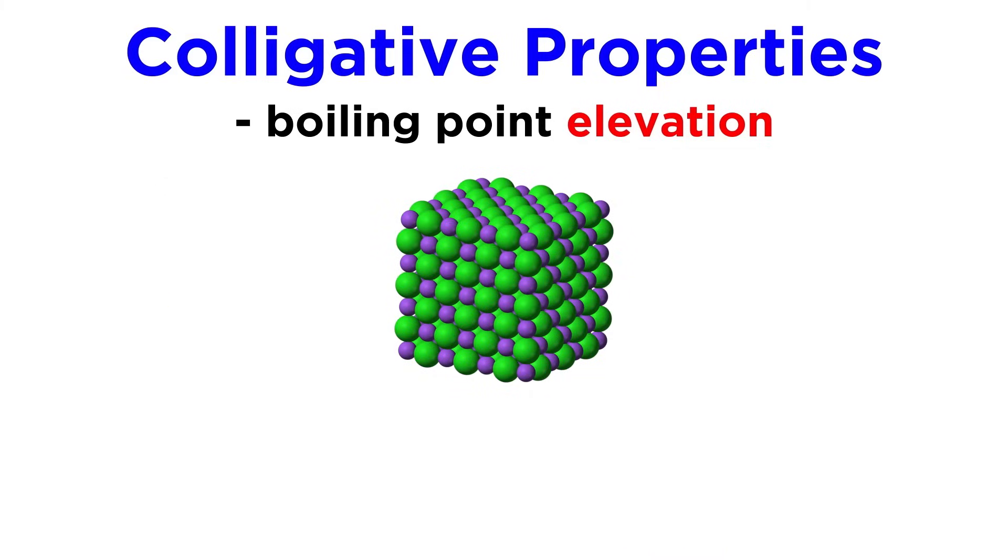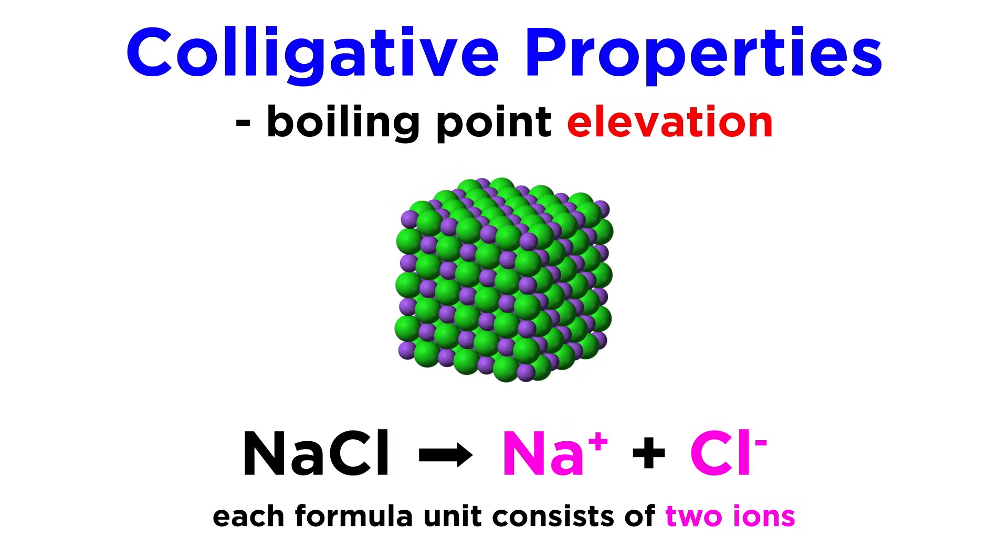We should point out that when considering a soluble ionic solid as a solute, there is an additional factor that must be considered. Because each formula unit of an ionic solid will dissociate into some number of ions, we need to account for this number, as each individual ion will act as a solute particle.